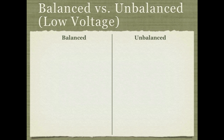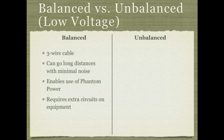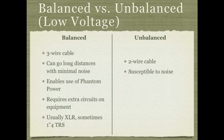Let's recap. For balanced cables at low voltage (instrument, mic, or line level), we have three wires, can go long distances with minimal noise, and can use phantom power. One disadvantage is that balanced cables require extra circuits on the input equipment to flip the negative signal. These usually use XLR connectors or sometimes a TRS connector. For an unbalanced cable, that's a two-wire cable susceptible to noise — but usually the noise isn't too bad over short runs of about 20 feet or 6 meters.